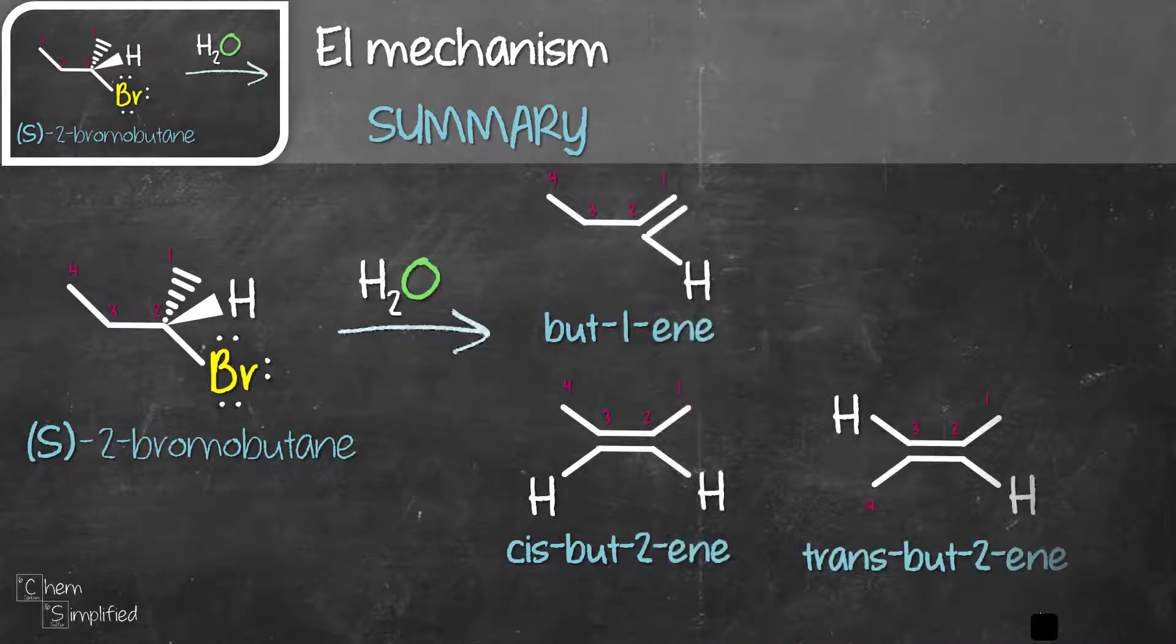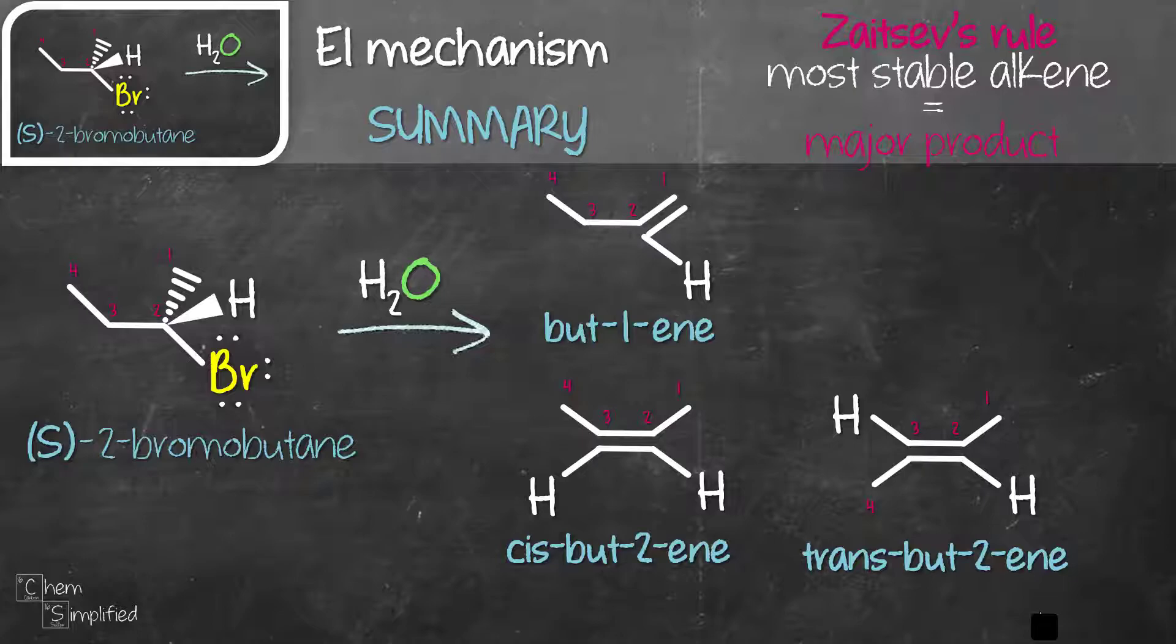When 2-bromobutane undergoes elimination reaction with water, we obtain three products. E1 reactions always follow Zaitsev's rule which states that the major product is always the most stable alkene. Therefore, from the three products we obtain, trans-but-2-ene is the major product because that's the most stable alkene.